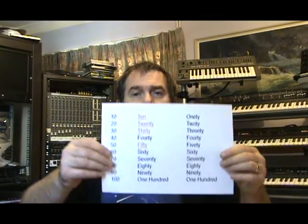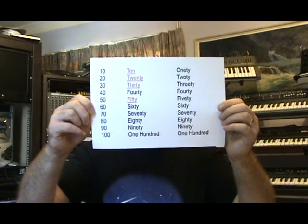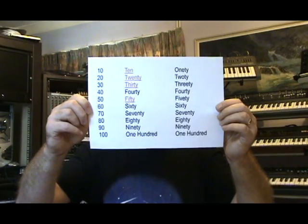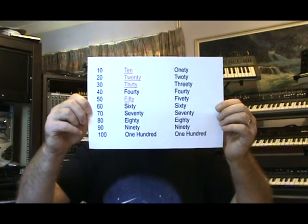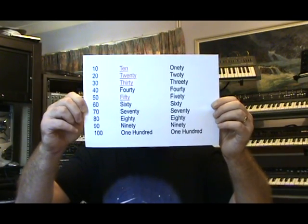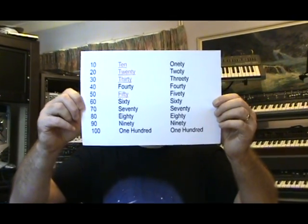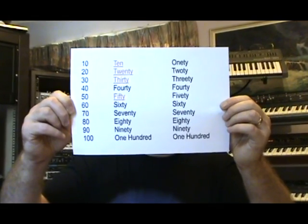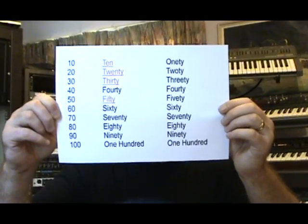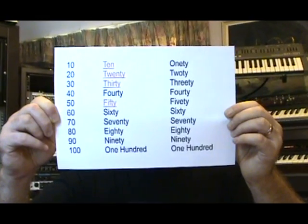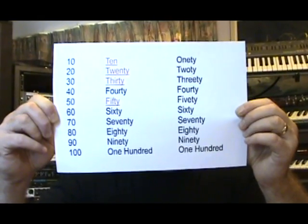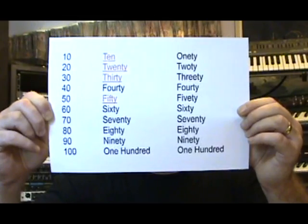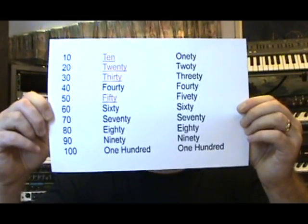Looking at this piece of paper here, we have in red: 10, 20, 30, and 50, which are illogically named. 10 should be 1T, 20 should be 2T, 30 should be 3T, and 50 should be 5T. Apart from that, all of the rest of those numbers follow a logical format.